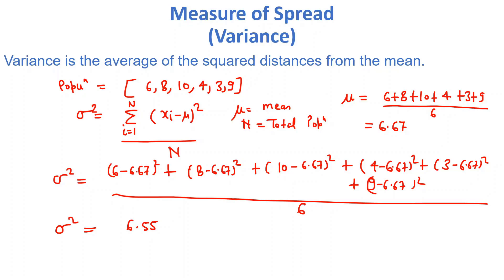Variance tells us how much each data point varies from the mean. So here we can see how each data point — like 6, 8, 10 — varies from this particular mean value. We can say that variance is the measurement of the variation that happens inside the data.